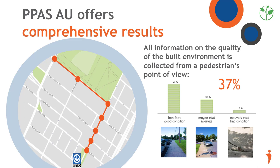Results take shape in different visual formats designed to support evidence-based decision-making for public authorities. The Audit allows evaluating proportions of an observed trajectory that are in good condition, as well as identifying specifically which parts are problematic, compelling beneficial interventions on the public domain.